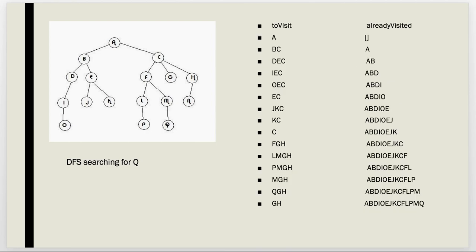The next algorithm is depth-first on the same problem. This time we're going to use a stack instead of a queue. We still have the same two lists: to-visit and already-visited. What depth-first does is go and search as far to the left as possible before going back up — it keeps trying to go left until it can't, then tries one level right and goes back down.